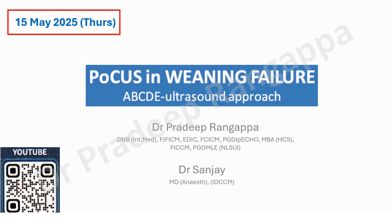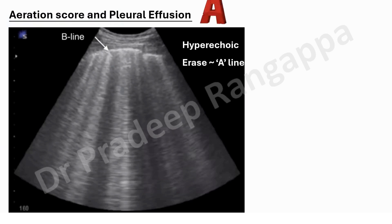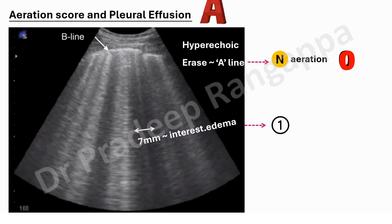The ABCDE acronym stands for: A = Aeration Score, B = Below Diaphragm, C = Cardiac Ultrasound, D = Diaphragmatic assessment. We've covered these independently in various other videos; we've just packaged it as a systematic approach towards assessing for weaning. For A — aeration score and pleural effusion — when assessing a patient for weaning and extubation, we look at the lung aeration score. We look for a pattern, then for B-lines.